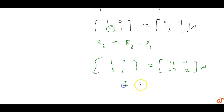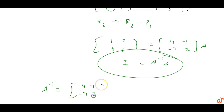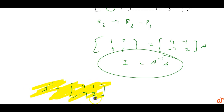This gives us A inverse times A. So A inverse is: four minus one minus seven and two. That is our A inverse.